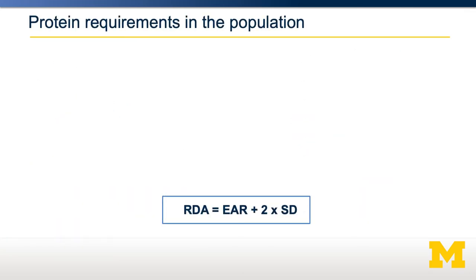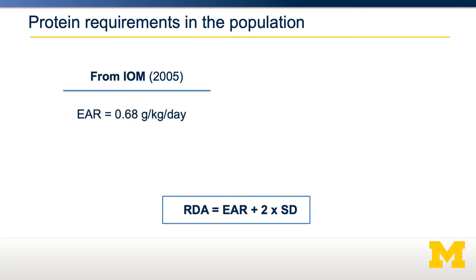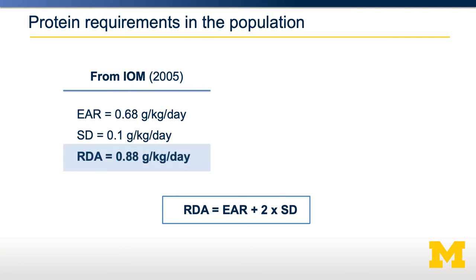Recall, the RDA is the EAR plus two standard deviations. When the Institute of Medicine was setting the RDA, they measured the EAR across people to be 0.68 grams per kilogram per day, usually by nitrogen balance. The standard deviation of these measurements was pretty low — 0.1 grams per kilogram per day. Therefore, they estimated the RDA to be 0.88 grams per kilogram per day, and rounded that down to 0.8. Remember, the RDA is the amount of protein required for 97.5% of people.